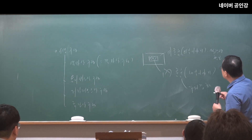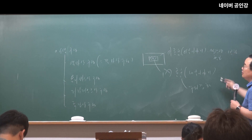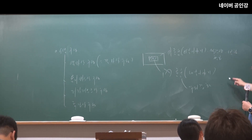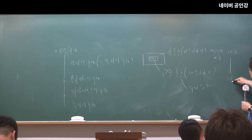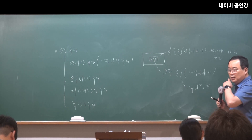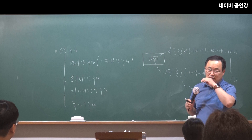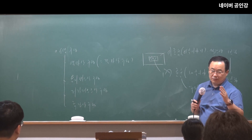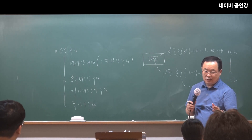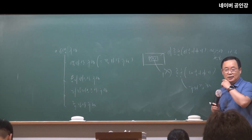외부 이야기(외화)는 보통 1인칭으로 나오고, 내화는 주로 3인칭으로 전개됩니다. 따라서 1인칭에서 3인칭으로 시점의 이동이 반드시 있는 것이 액자식 구성의 특징입니다.